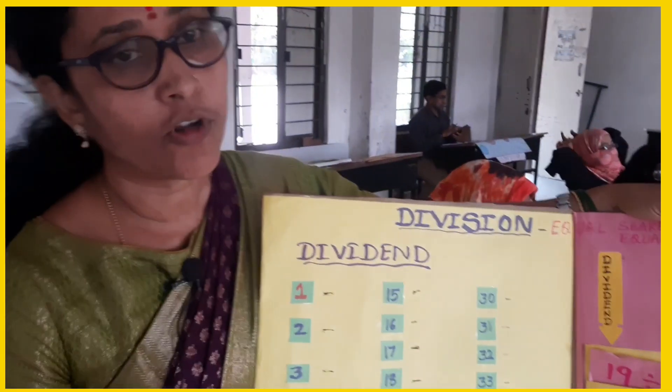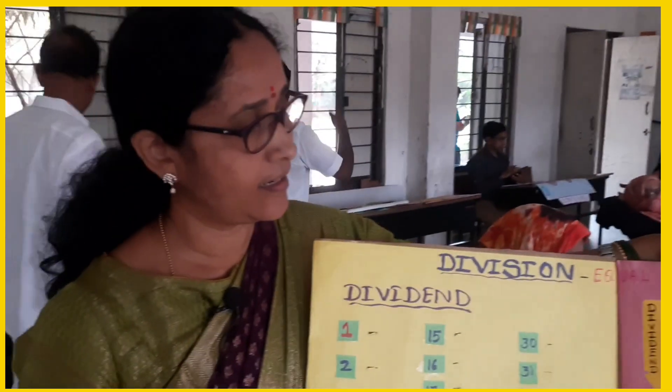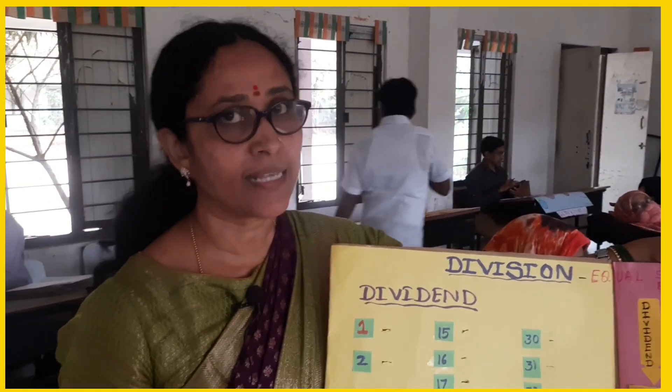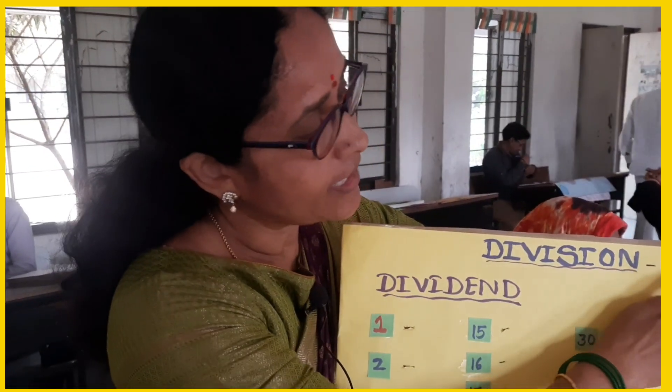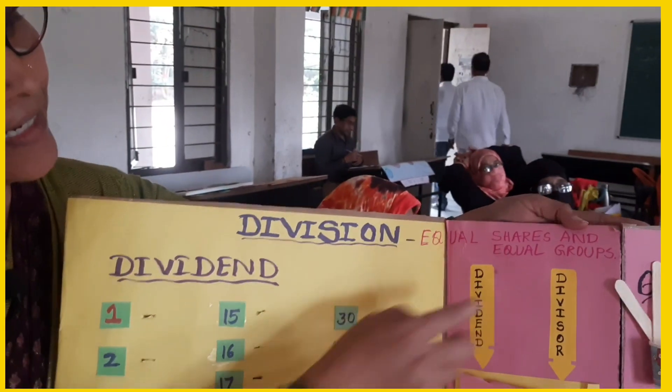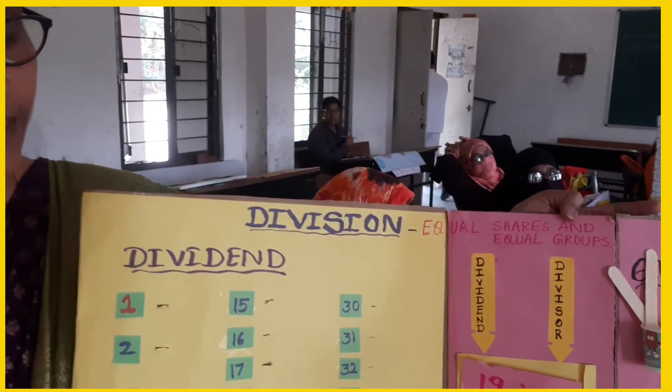This is the 4th class math, page number 130 — equal shares and equal groups.